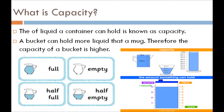Look at picture A shown here. In the first picture, the mug is full — meaning its capacity is at maximum, with the most liquid. The second is empty, so its capacity holds nothing. The third is half full, and the fourth is half empty. So, full mug ki capacity sabse zyada hai, kyunki usme bahut zyada amount mein liquid hold ho rakha hai.